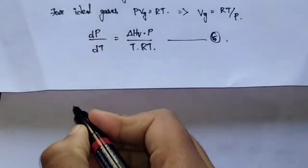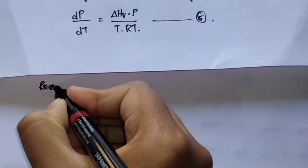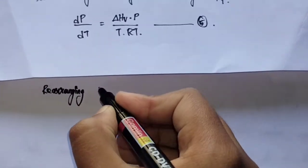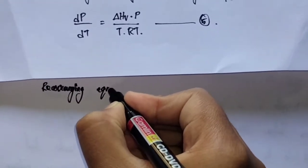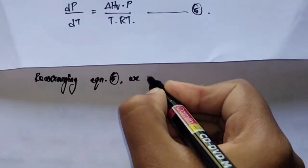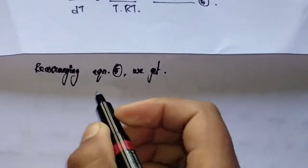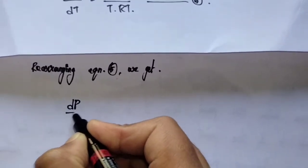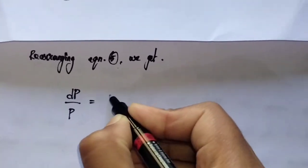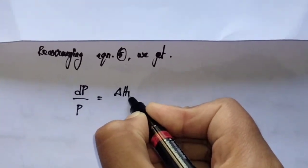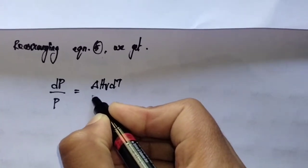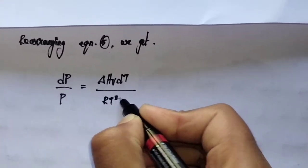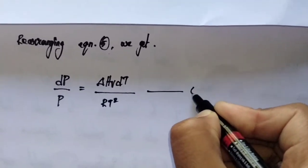Rearranging equation number 5, we get dP/P is equal to ΔHv·dT upon RT². Take this as equation number 6.